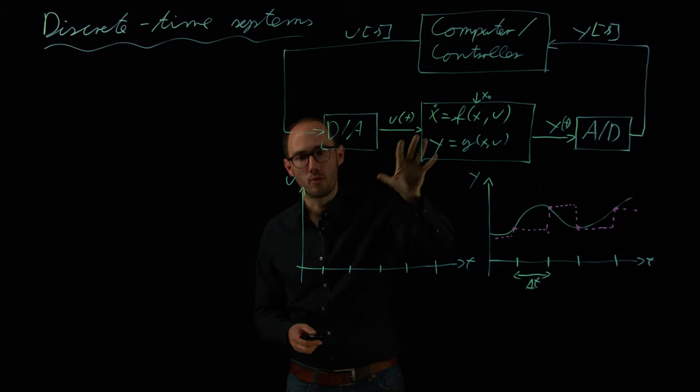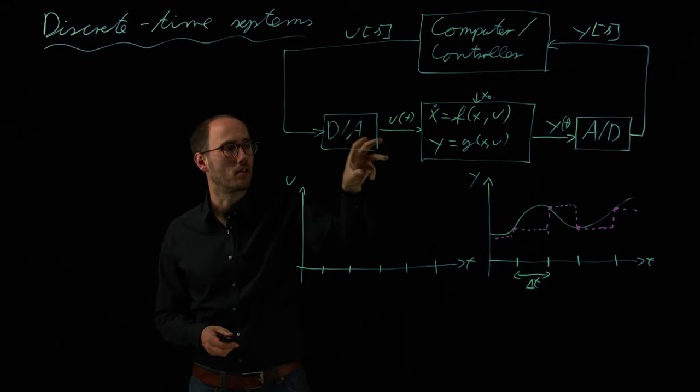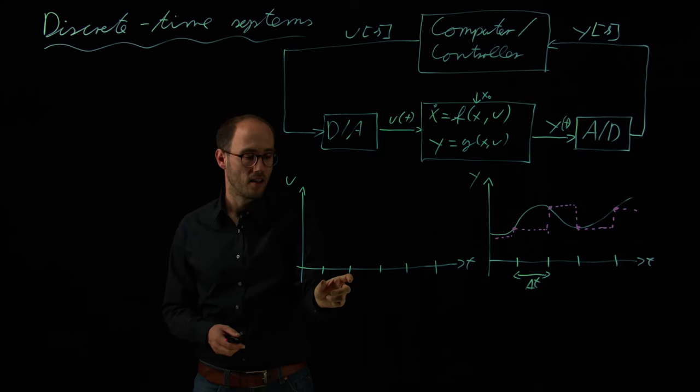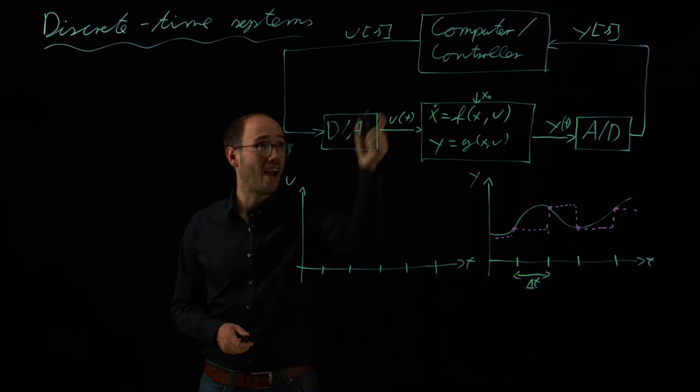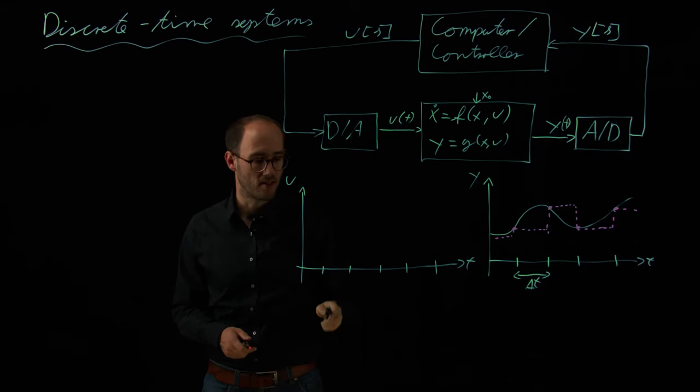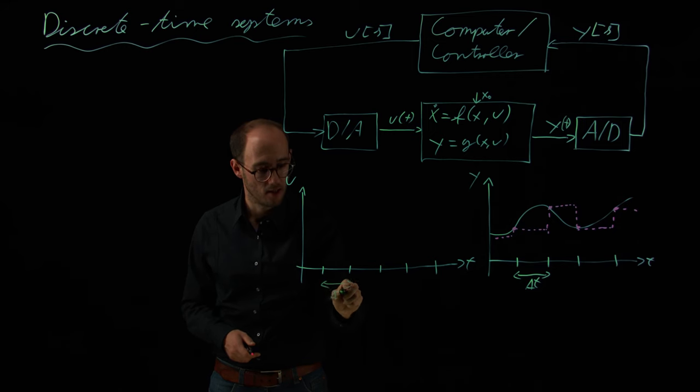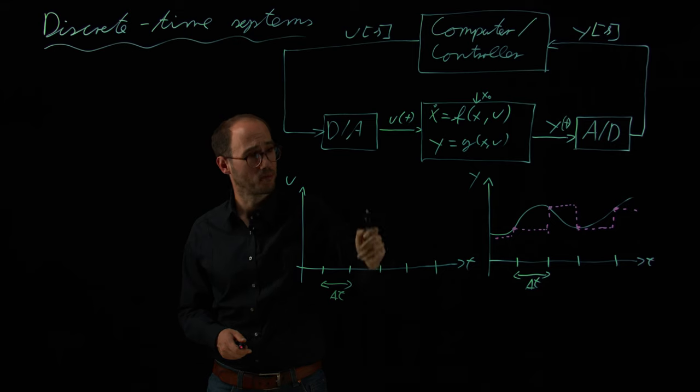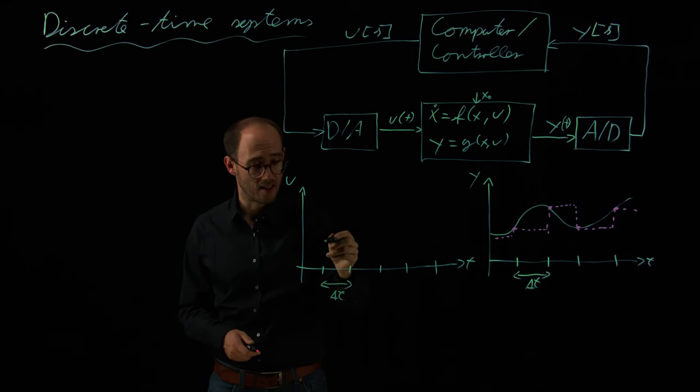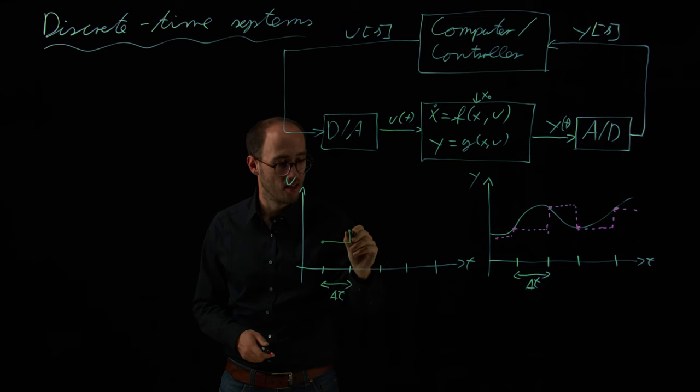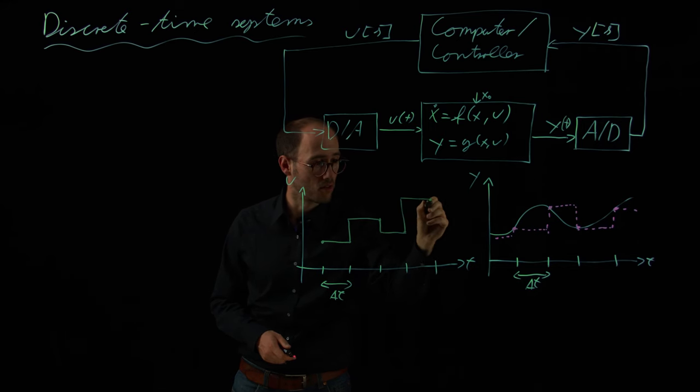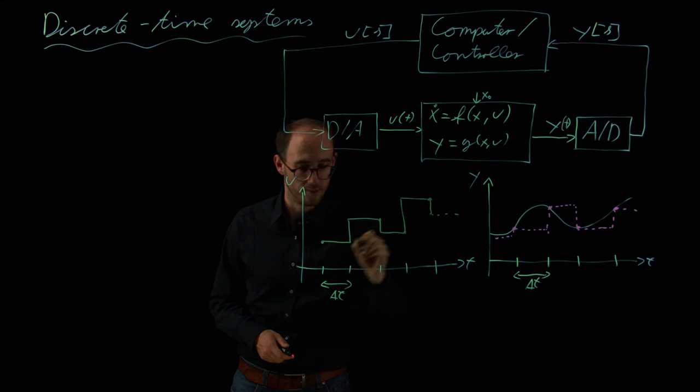Also, if I want to manipulate this system, so if I have some actuator which can manipulate that system from outside, normally this computer or controller has also only the opportunity to change its input to the system, so its output which is the input to the system, on this delta T time grid. So that means also that this signal u of k at the time steps k will be only changing at these discrete time steps, and here we consider zero order hold. That basically means that also just at these time steps, we will have a potential change of the input quantities. Something like this, for example.